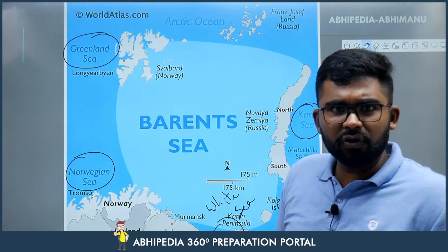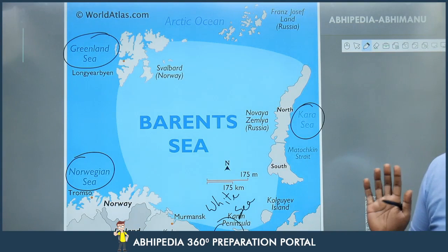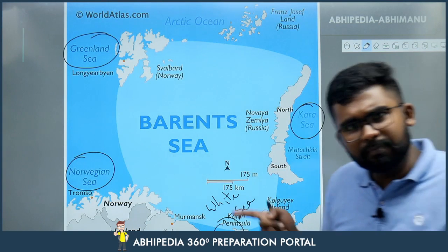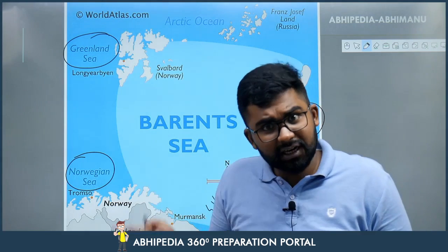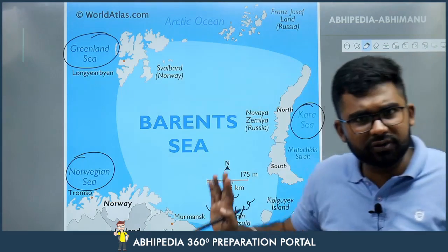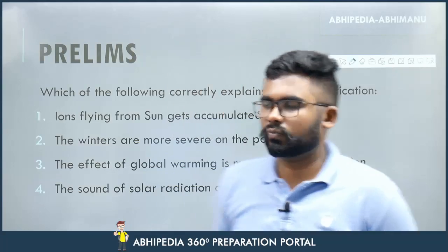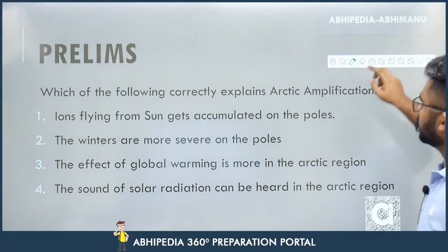In case a map question comes, remember all four surrounding seas. Also remember: basin countries are Norway and Russia; regional countries of the Barents Sea region are Norway, Sweden, Finland, and northwest Russia. These geographic details about the Barents Sea region and basin are likely to appear in UPSC geography questions.